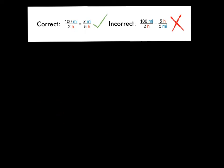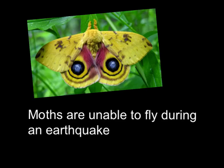So the one over here on the right is incorrect, because here I have miles in my numerator, but I have miles in my denominator. So that would be an incorrect setup. And, interesting fact I found, mules are unable to fly during an earthquake. Not sure why. Maybe somebody can look that up. Have a great day.